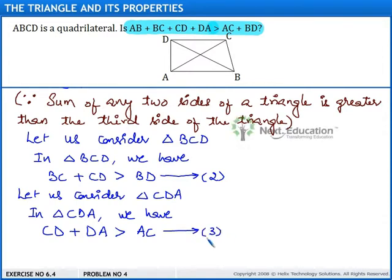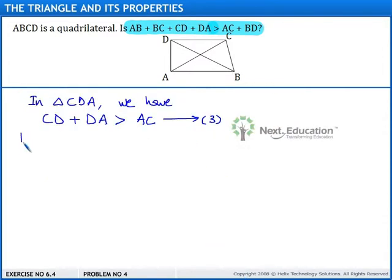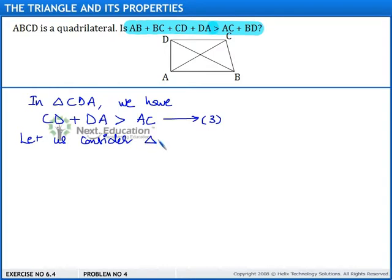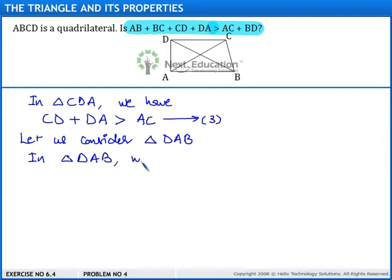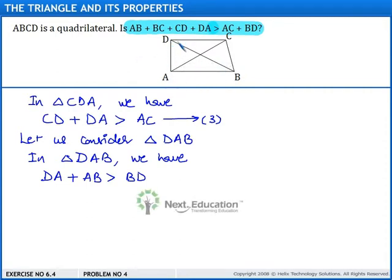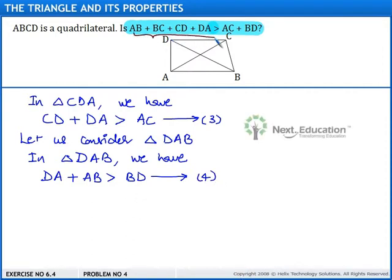Now let us consider the fourth triangle, triangle DAB. In triangle DAB, we have DA plus AB is greater than BD. We call this Result 4. To verify the given result, we need to add all four results.